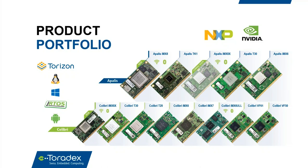Both module families are pin-to-pin compatible within each family, enabling customers to upscale or downscale without modifying the baseboard. For example, you can move from a Colibri iMX7 to an iMX6 for better graphics or memory performance, or downgrade for cost optimization — all without baseboard hardware changes. Toradex provides a complete, reliable solution for embedded computing across any target market.